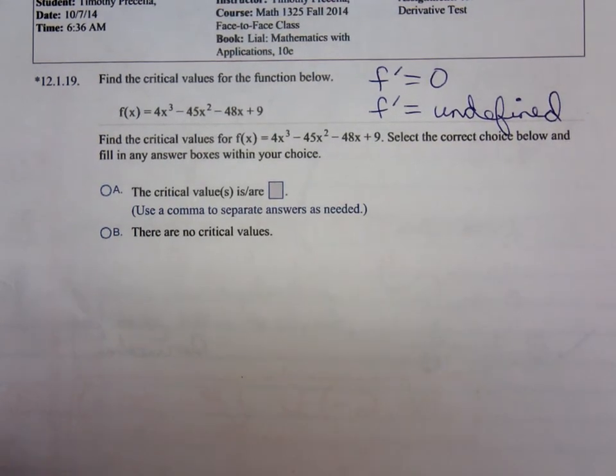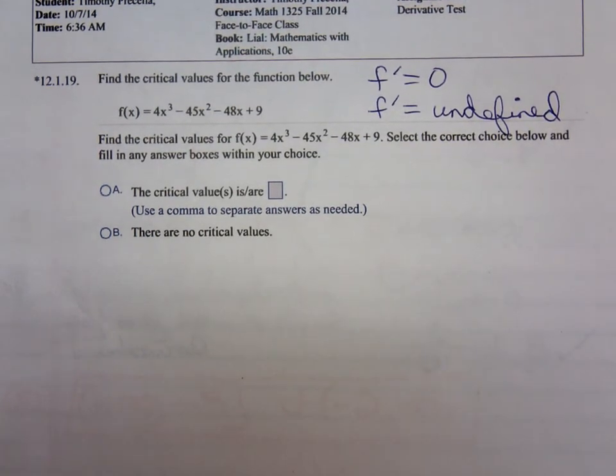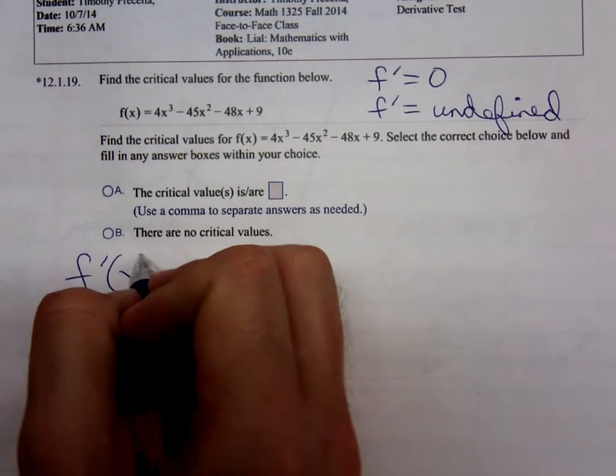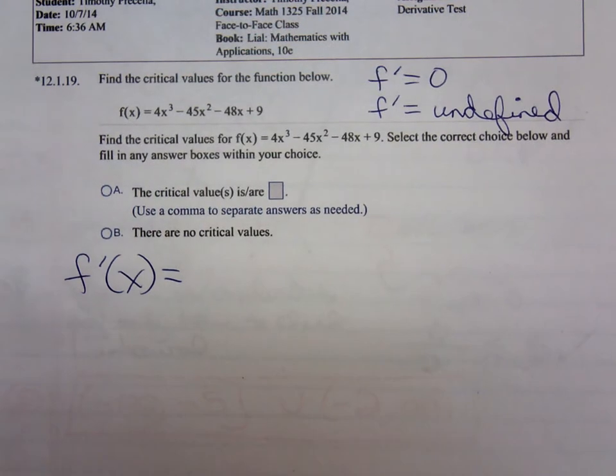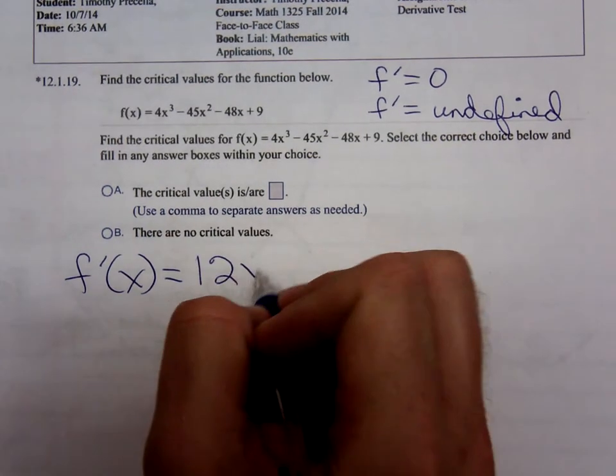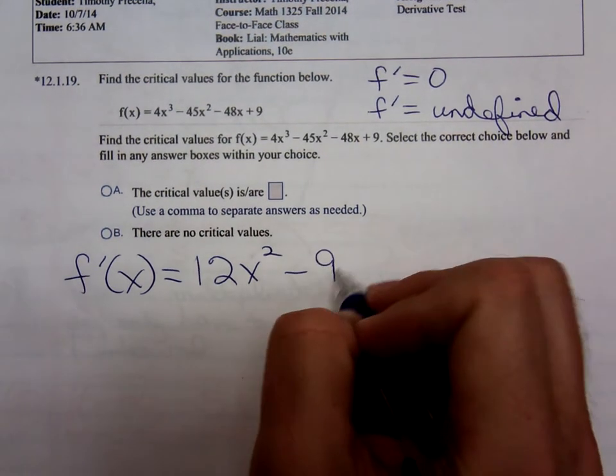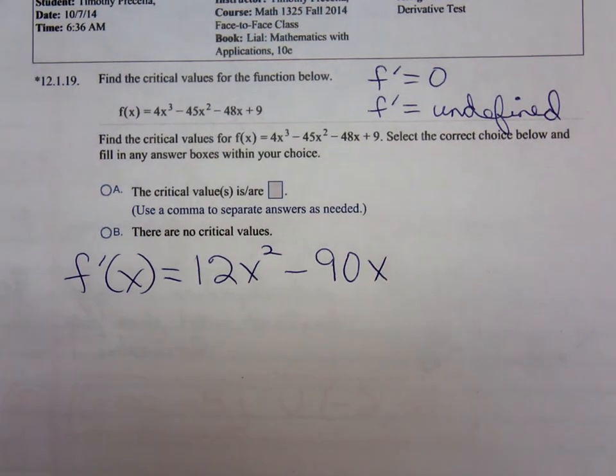So to find the critical numbers, we need to know where is the derivative equal to 0. In order to find where the derivative is equal to 0, what do y'all think we should do? Find the derivative. So f prime of x is equal to, differentiating we get 12x squared minus 90x. I agree. Minus 48.